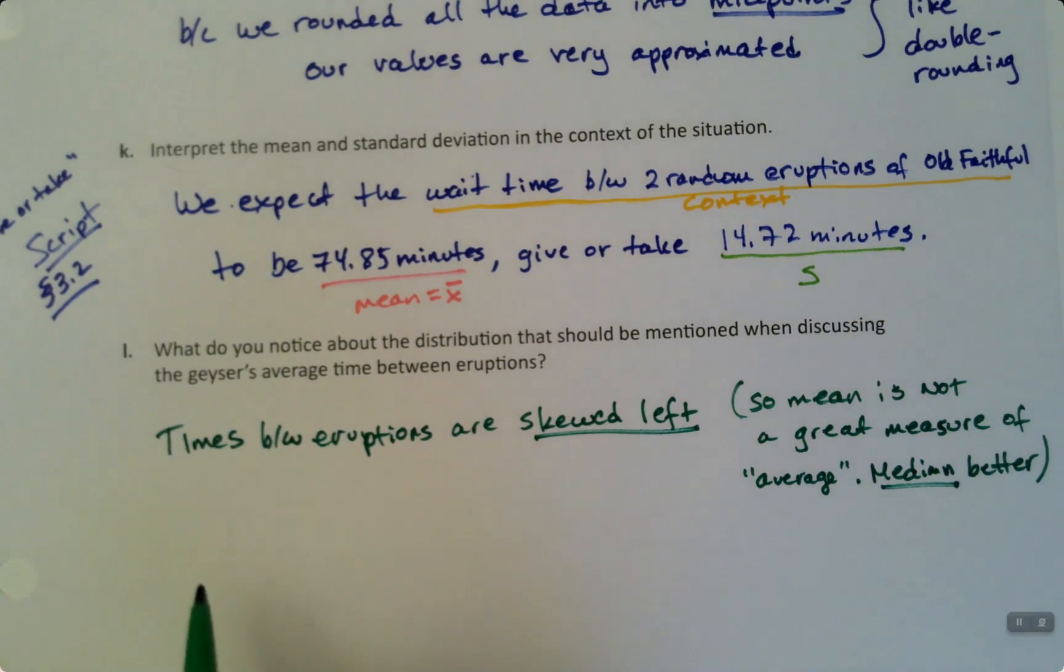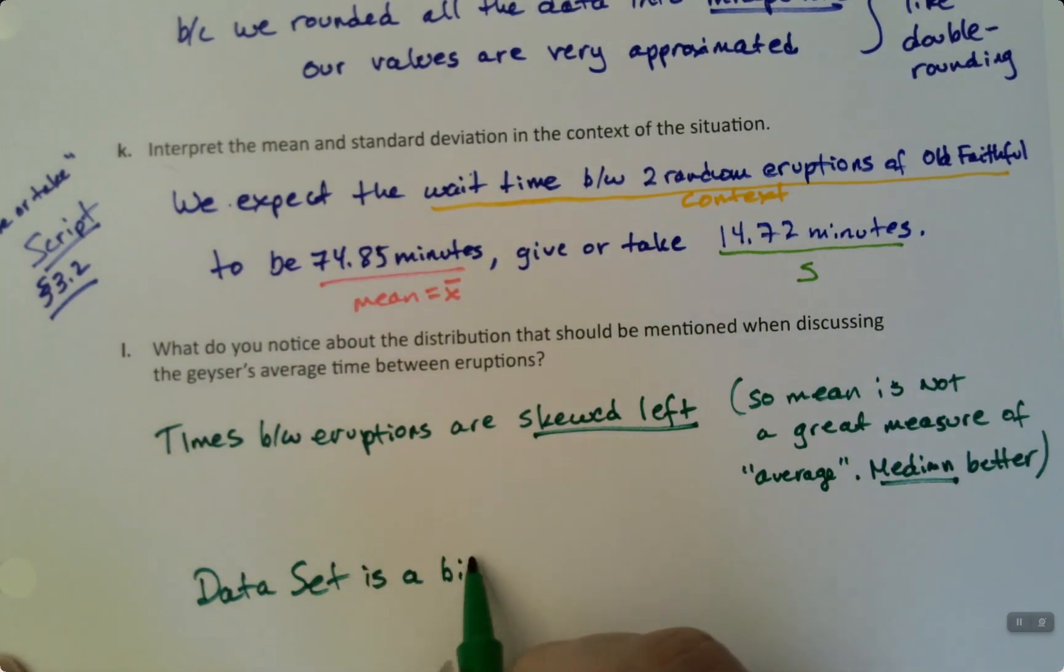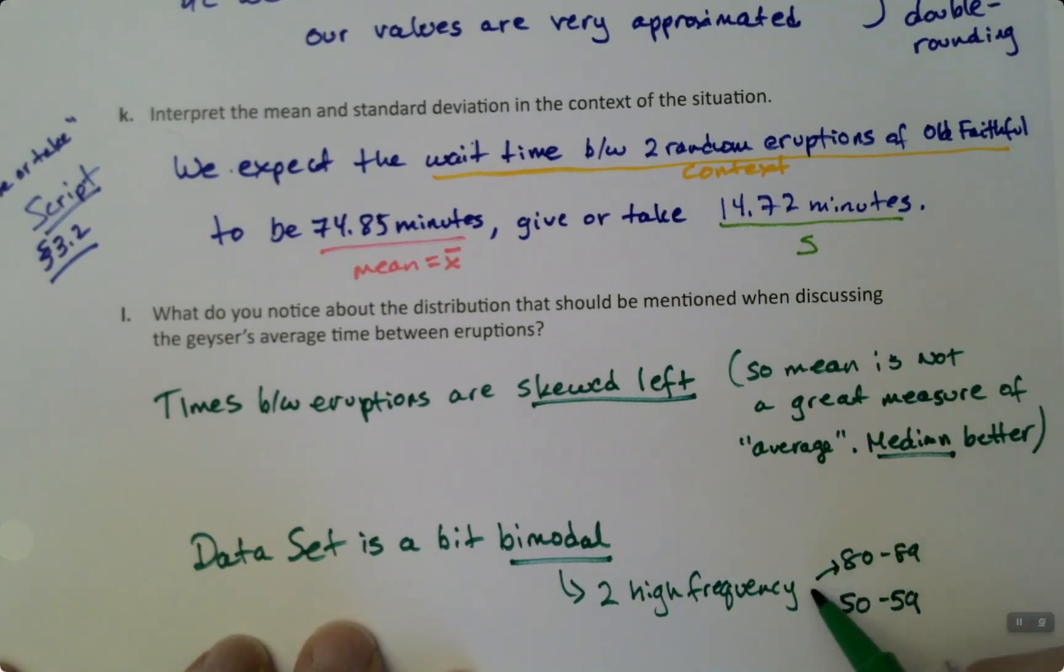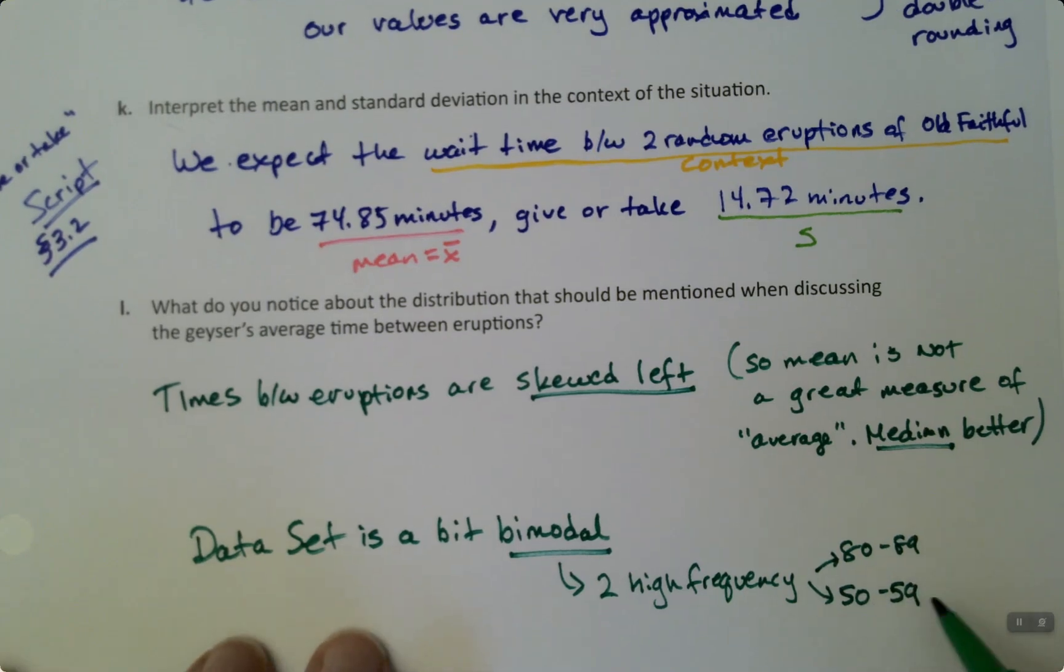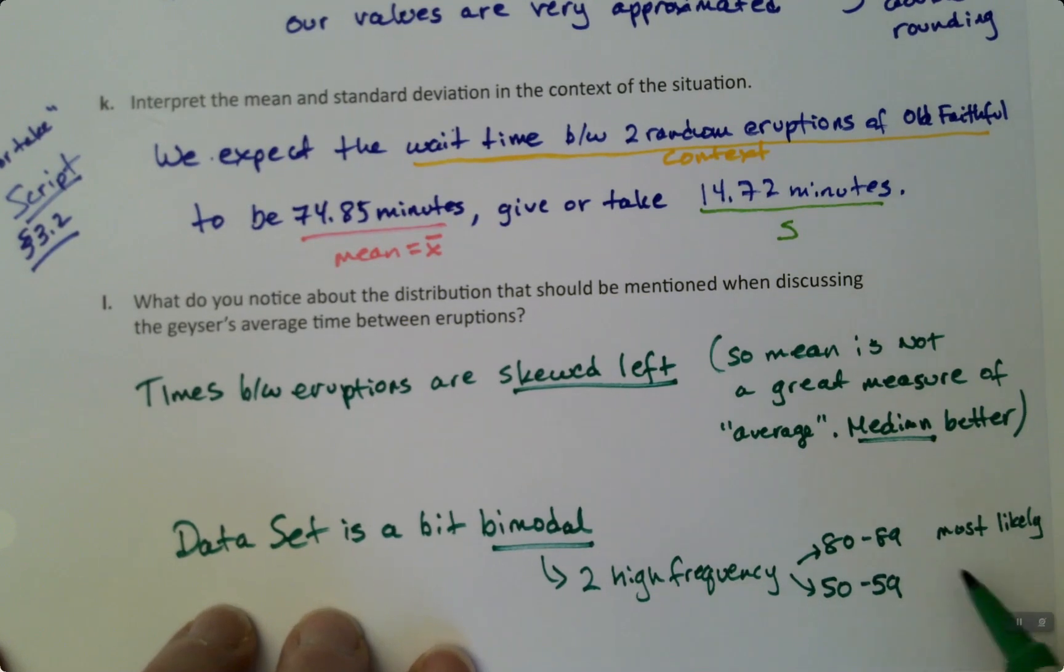Then you can also discuss, if you wanted to, the data set is a little bimodal. Bimodal, meaning two peaks. So it has two high points, two high frequency zones. 80 to 89 obviously, but 50 to 59 is the other one. And you're probably going to be waiting either between 80 and 89 minutes or 50 and 59 minutes. Those are the most likely wait times. So if you drove up and said, you know, how long am I going to have to wait, they'd say, well, just a little under an hour or an hour and a half. Most likely wait times.